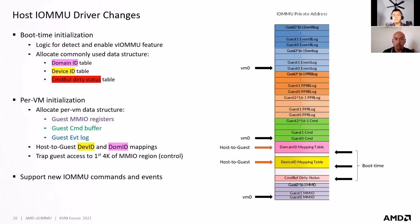When a VM is started, the host IOMMU driver will allocate per-VM data structures, which are mainly used for DMA mapping. These include the guest MMIO registers, the command buffer, and the event log. It will also create host-to-guest device ID and domain ID mappings, and register traps for MMIO regions needed for programming the VIOMMU hardware.